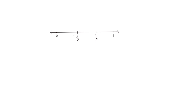And then we're going to divide each third into four pieces, creating twelfths. So we count one through twelve. So our first point would be zero twelfths, then one twelfth, two twelfths, three twelfths, four twelfths, five twelfths, six twelfths, seven twelfths, eight twelfths, nine twelfths, ten twelfths, eleven twelfths, and twelve twelfths would be equal to one.